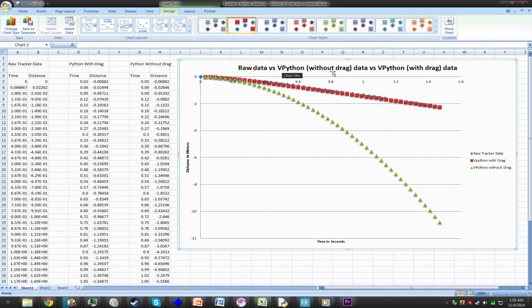Both the raw data and vPython model with drag predict terminal velocity. The graphs soon become linear, and since the graphs become linear, the slopes, meaning the derivatives which are velocity, become constant. This shows that the object has reached terminal velocity and is no longer accelerating.